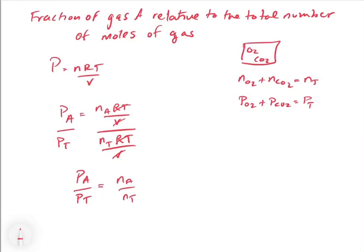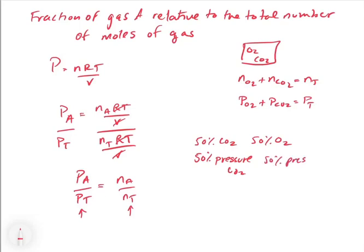The fraction of the number of moles will determine the fraction of the pressure. So if you have 50% CO2 and 50% O2 in your mixture, then 50% of the pressure will be from CO2 and 50% of the pressure will be from O2. If you have half your moles as CO2 and half as O2, then half your pressure is from CO2 and half is from O2.